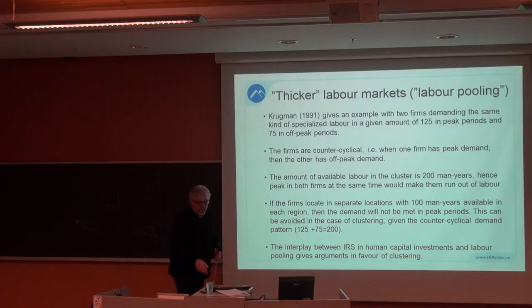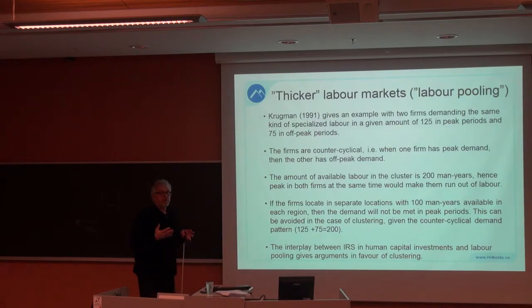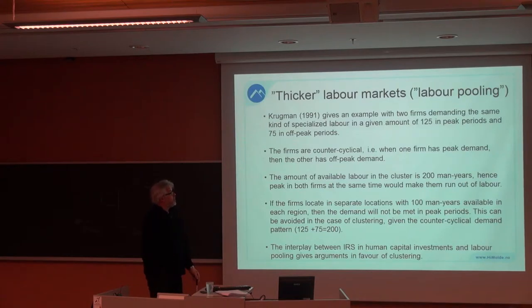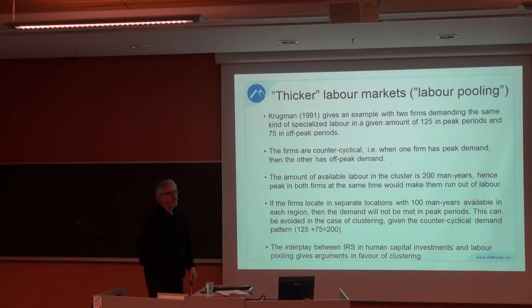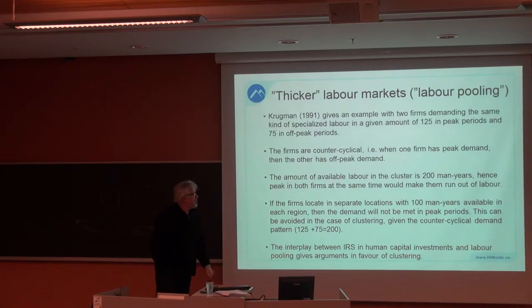This is what we call labor pooling, which means the benefits of sharing the labor force. Here there is a numerical example where two firms demand 125 people in the peak periods and 75 people in the off-peak periods. They are counter-cyclical in nature — when the peak is for one, the other is in off-peak. And if we have 200 man-years, that will be sufficient.